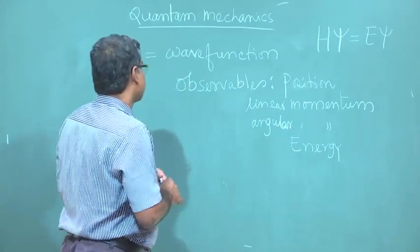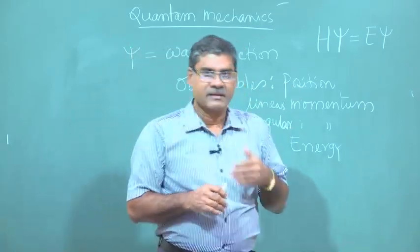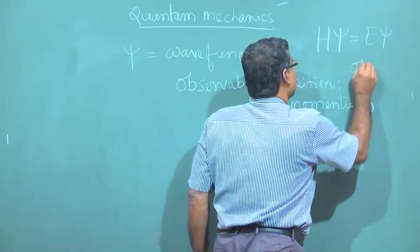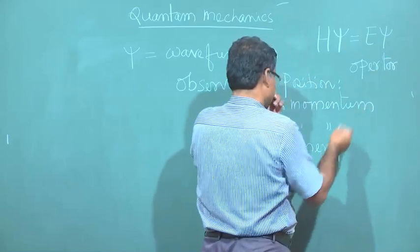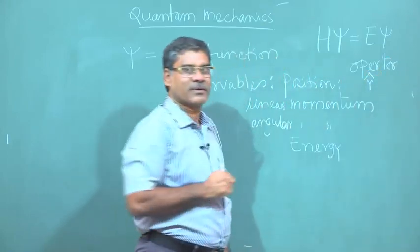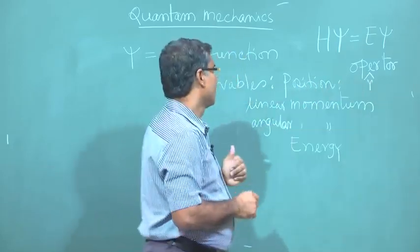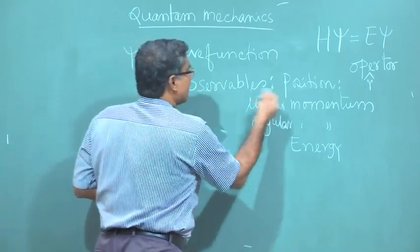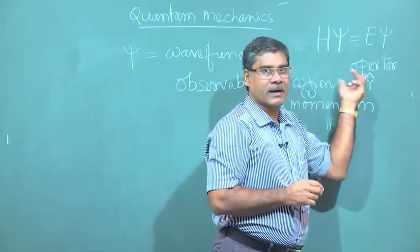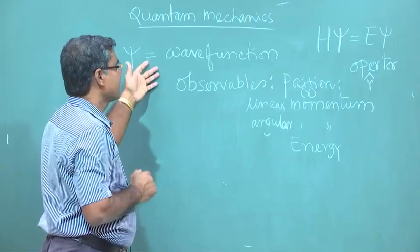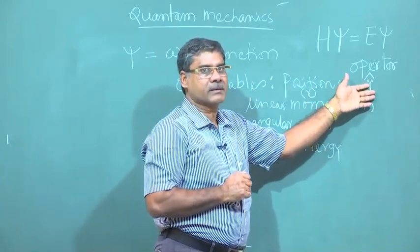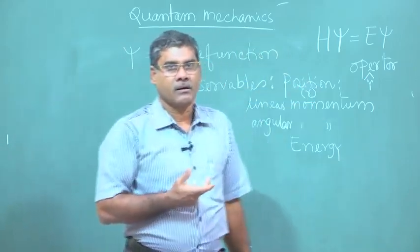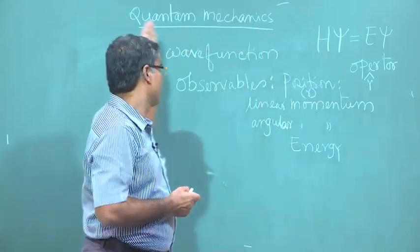In quantum mechanics, for each observable there will be an operator. For example, for position there is a corresponding position operator, which we write as R-cap. We want to observe the position as an observable, corresponding operator is R-cap. The idea in quantum mechanics is that if I apply this operator on the wave function, then we will get the output — we will get the observable. If we apply the position operator on the wave function, I will get the position.